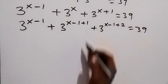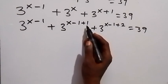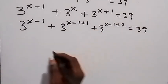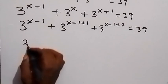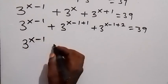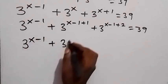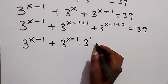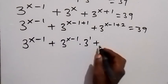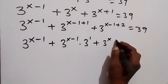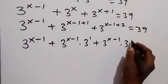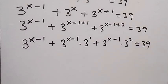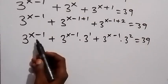From here we can use the law of indices. The plus 1 can be written as times 3 raised to power 1, and the plus 2 as times 3 raised to power 2. So we have 3 raised to power x minus 1, plus 3 raised to power x minus 1 times 3 raised to power 1, plus 3 raised to power x minus 1 times 3 raised to power 2, equals to 39.